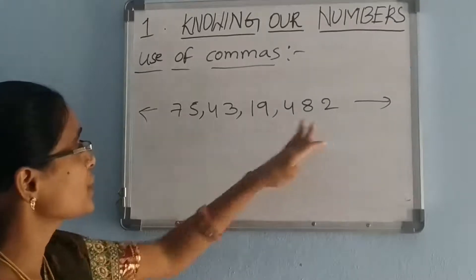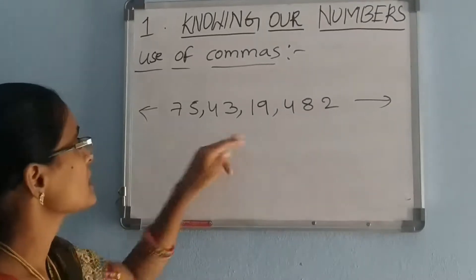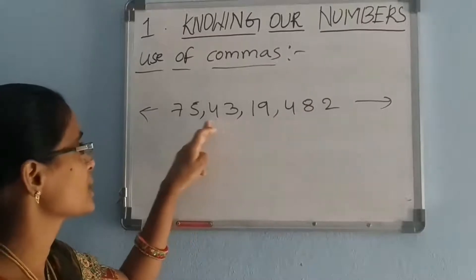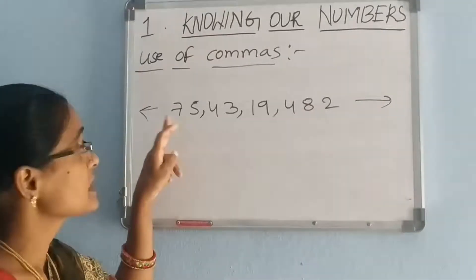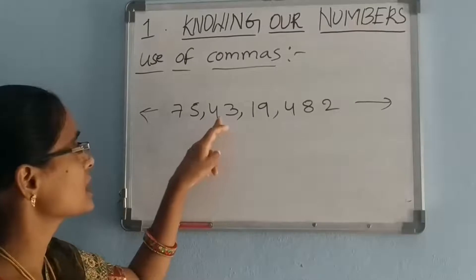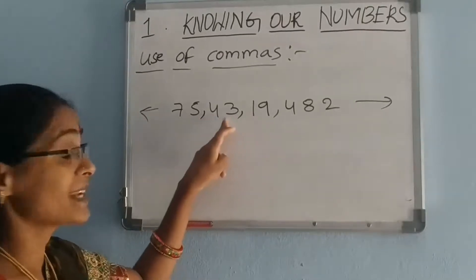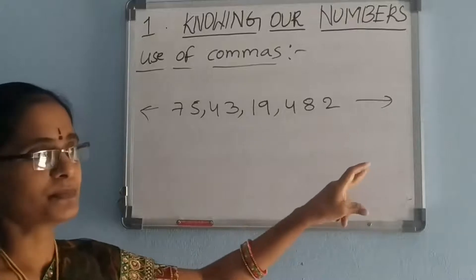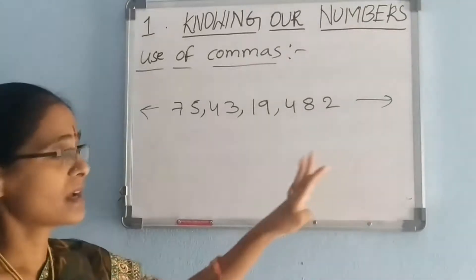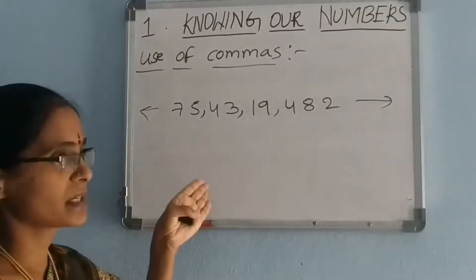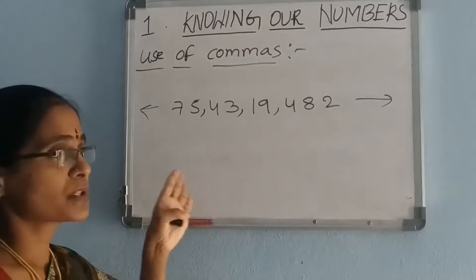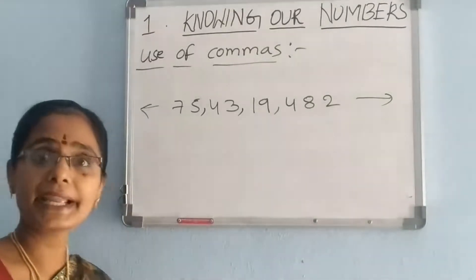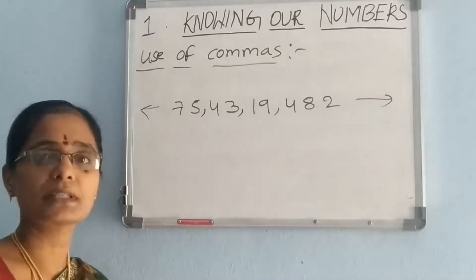How to read this number? 1s, 10s, 100s, 1000s, 10,000s, lakhs, 10 lakhs, crores, 10 crores. So: 75 crores, 43 lakhs, 19,482. Use of commas in the Indian system helps us in reading and writing larger numbers easily.